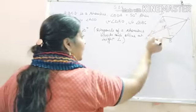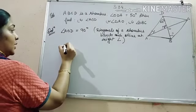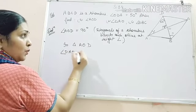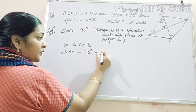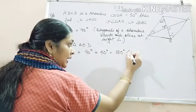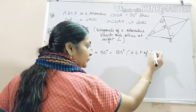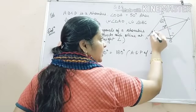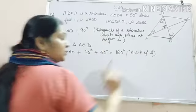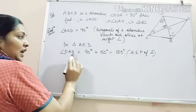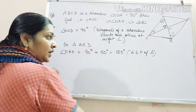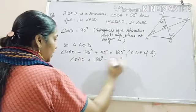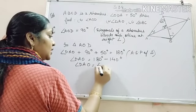Now next, angle DAO. You see in this triangle AOD, angle DAO plus 90 degrees plus 50 degrees equals 180 degrees by angle sum property of triangle. This triangle AOD has this angle given as 50 degrees, this you have found as 90 degrees. You are supposed to find this angle. So angle DAO plus 90 degrees plus 50 degrees equals 180 degrees. Solving this we get 180 degrees minus 140 degrees. Therefore, angle DAO is equal to 40 degrees.